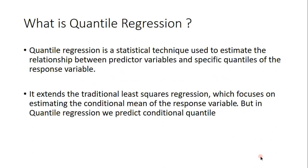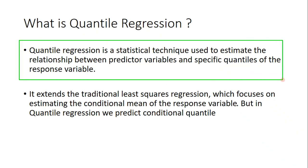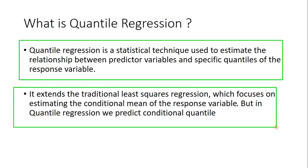So what is quantile regression? Quantile regression is a statistical technique used to estimate the relationship between predictor variables and specific quantiles of the response variable. In traditional regression we predict the mean, but here we predict the quantile. For example, if outliers are very important, we divide the data into quantiles and predict within that outlier region. So in traditional regression we predict the conditional mean; here we predict the conditional quantile.